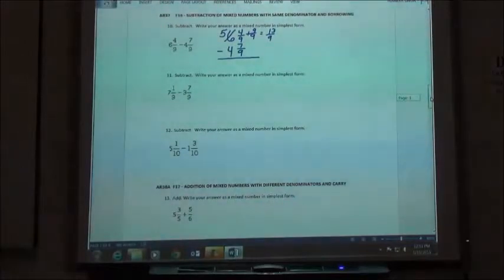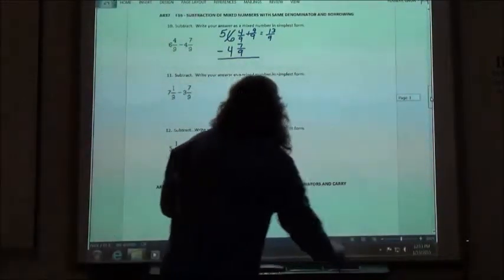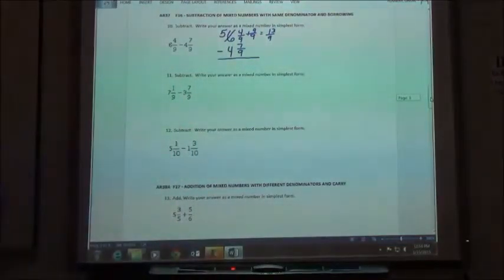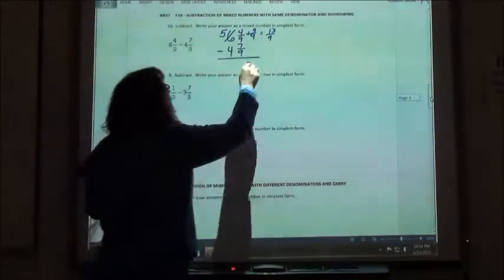If you think about 13 9ths as a mixed number, 13 9ths would be 1 and 4 9ths. Now I can go ahead and do my subtraction because now I can take 7 away from 13. 13 minus 7 is going to give me 6 9ths.